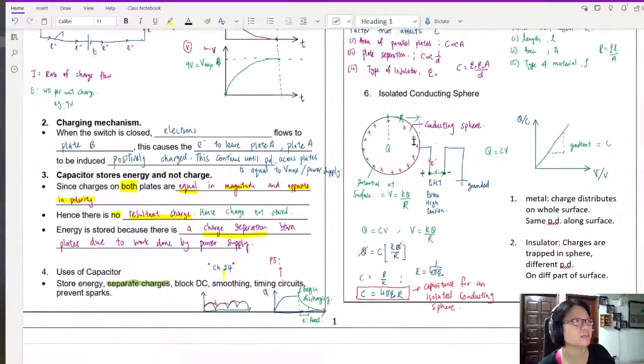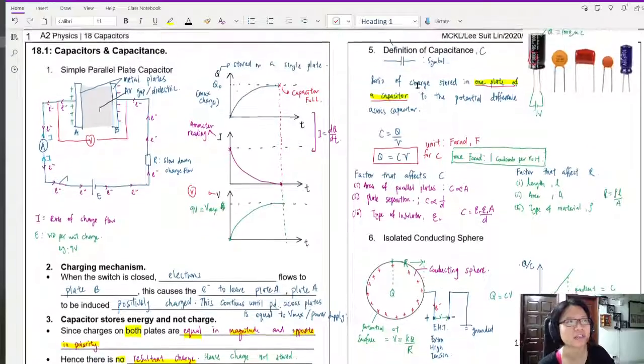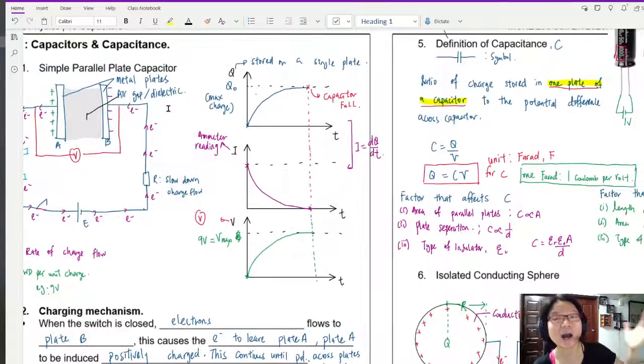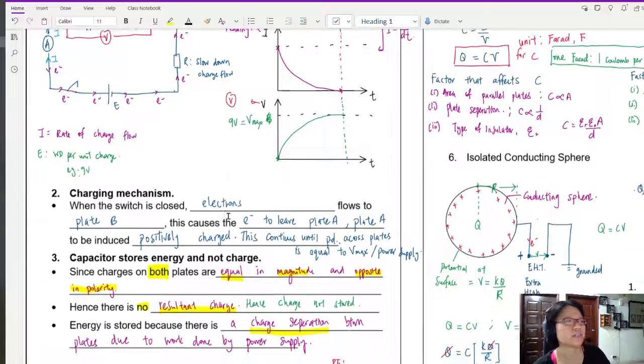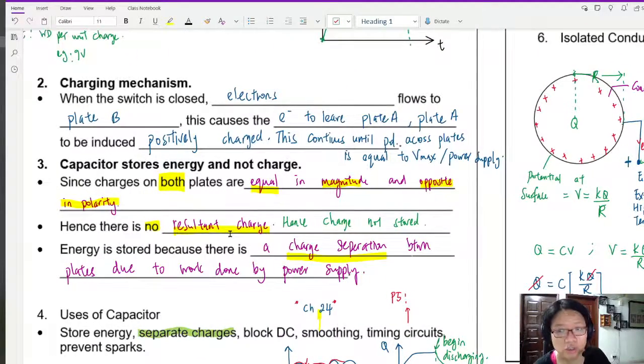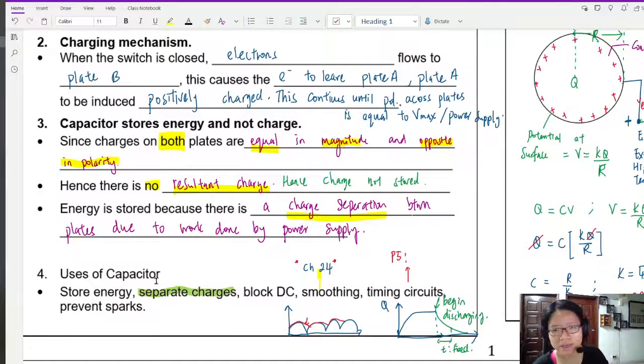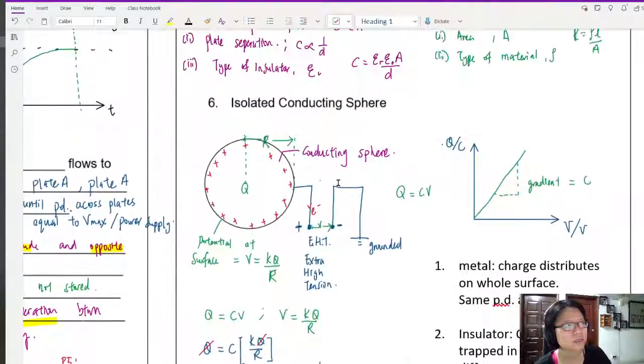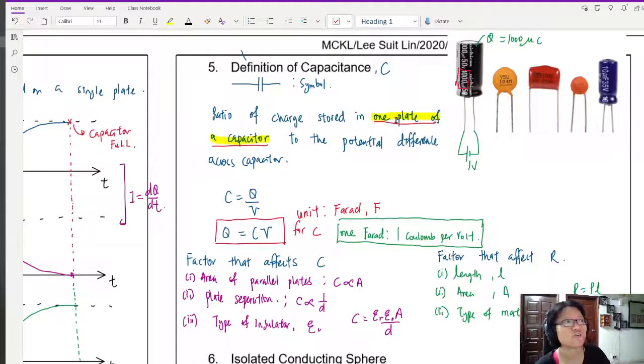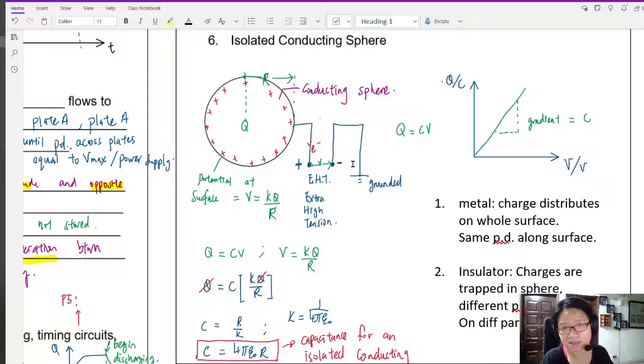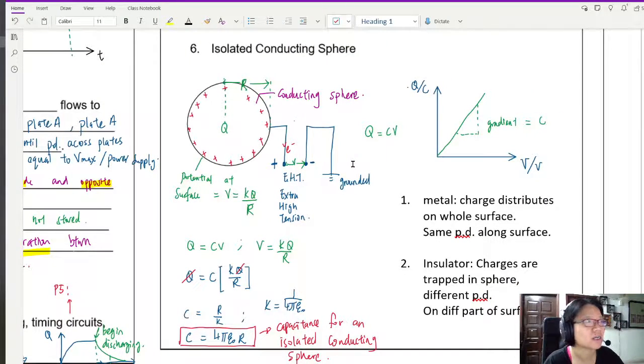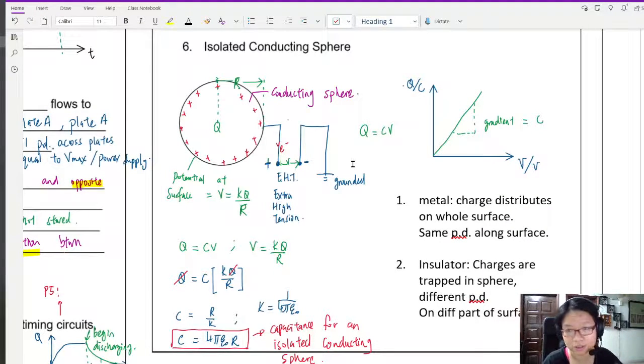So the basics of chapter 18 that you need to know before you tackle some questions, and before we connect this in a series and parallel circuit, is how a capacitor functions inside a very simple circuit, the charging and discharging mechanism, why capacitor is said to store energy but not charge. Some common uses of capacitor, sometimes they'll just ask you to suggest in paper for maybe one or two suggestions. Then how to define capacitance, which is the ratio of charge stored on one plate to the potential difference across the capacitor. And also the idea that when we have an isolated conducting sphere, it is also like a capacitor where it can allow you to store some charge on it.